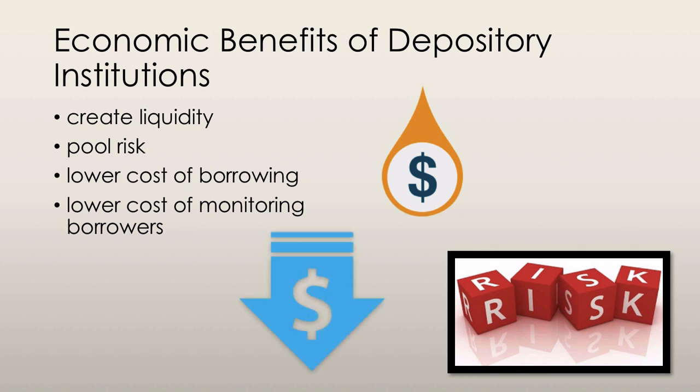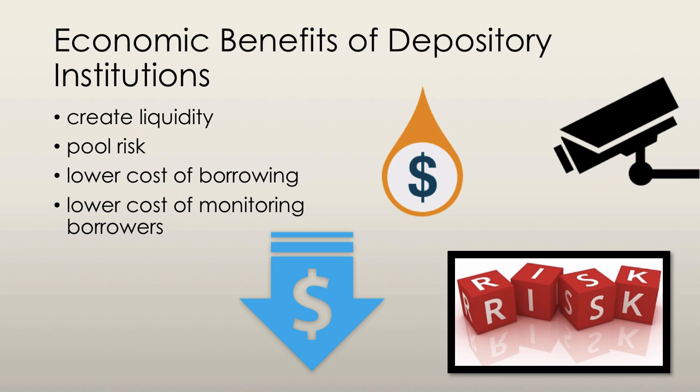Financial institutions also lower the cost of borrowing. Search time is reduced, as a firm can get the full amount of its loan from one financial institution instead of looking for individual lenders to lend partial amounts. Depository institutions also lower the cost of monitoring borrowers. If a household lends a firm money, each individual household would have to spend large amounts to monitor that firm. But with a large financial institution, the cost is reduced because only one institution needs to pay this monitoring cost.